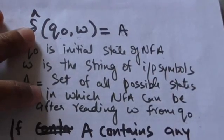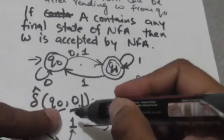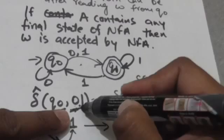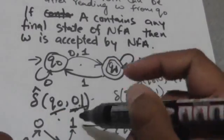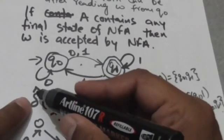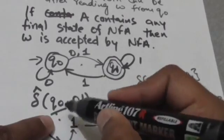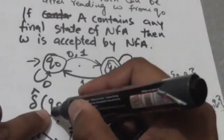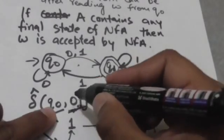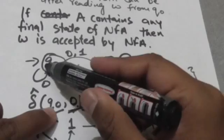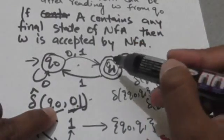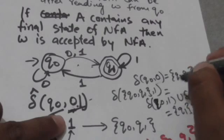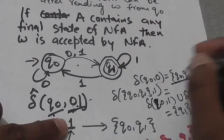Now we will check whether the string 0 1 is accepted by this NFA or not. We will apply this string to its initial state q0 — that is, we find the output of the extended transition function for initial state q0 and string 0 1. When the machine is in state q0 and reads input symbol 0, it has two options: it can stay in state q0 or jump to state q1. So the output of the transition function for state q0 and input symbol 0 is the set {q0, q1}.